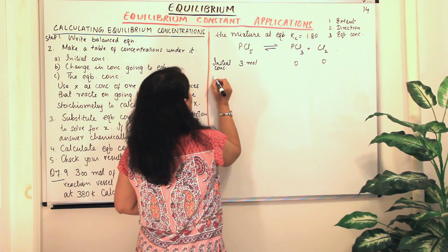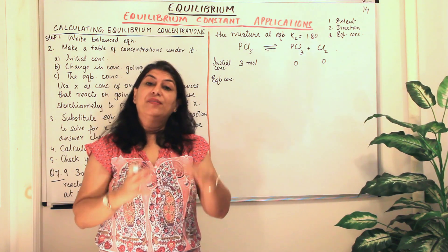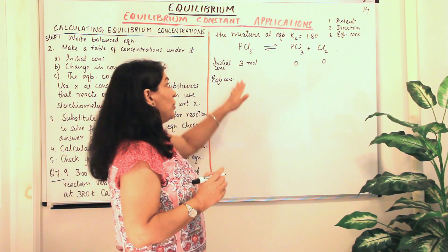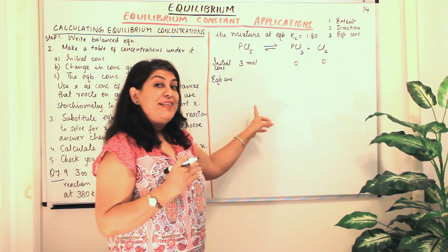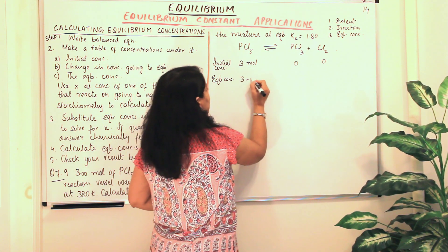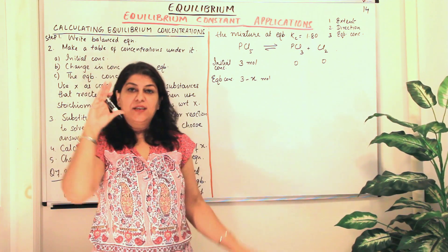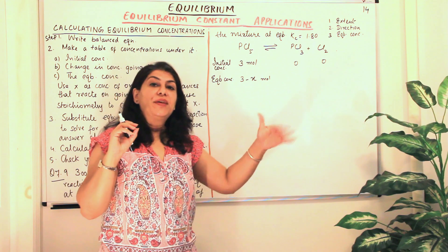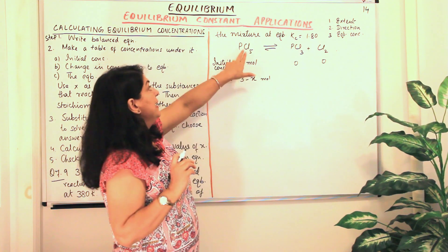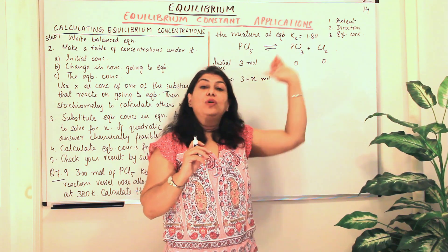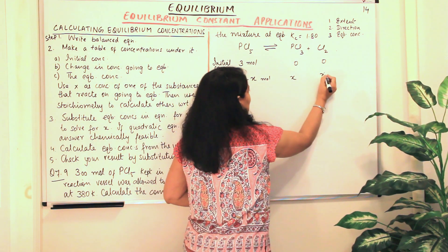Now, what are the equilibrium concentrations? Let us assume that X moles per liter of PCl5 reacted before arriving at equilibrium. So at equilibrium, the concentration of PCl5 is 3 minus X. X moles has reacted out of the initial 3, so what is left is 3 minus X. Looking at the stoichiometry of the reaction: if one mole of PCl5 reacts, one mole of PCl3 and one mole of Cl2 are formed. So if X moles of PCl5 reacts, X moles of PCl3 and X moles of Cl2 are formed.